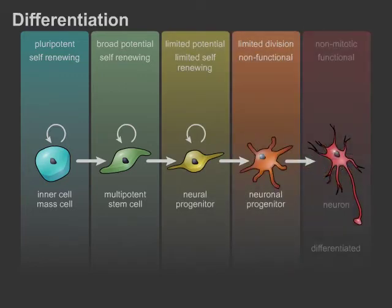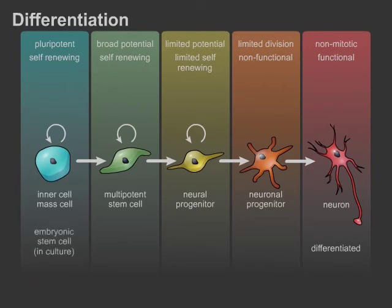Finally, differentiated cells are generated from committed progenitors. This same process can be mimicked in culture when pluripotent embryonic stem cells are isolated from the inner cell mass of a blastocyst.